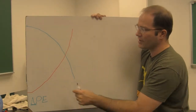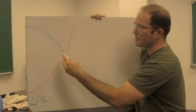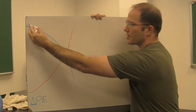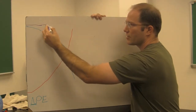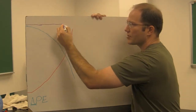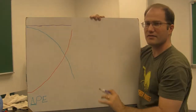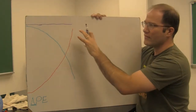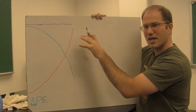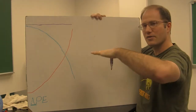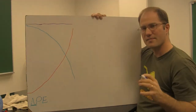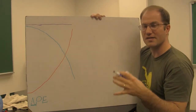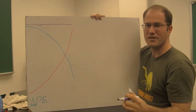Our total mechanical energy, which is the sum of these two, is going to be a horizontal line showing no change. Actually, let me show a slight downhill to this line — there will be a small decrease in the mechanical energy, and that's because of the non-conservative force of air resistance as the ball falls through the air.